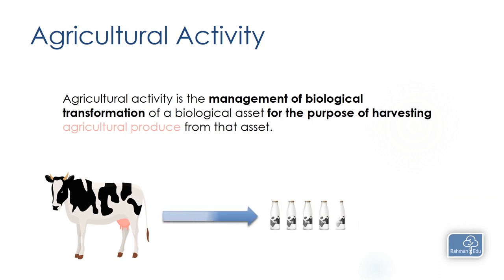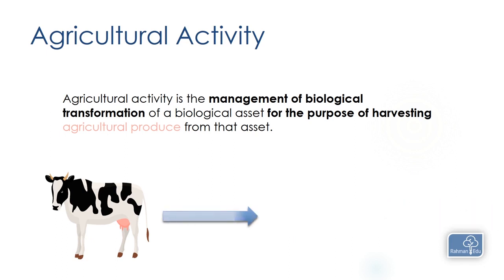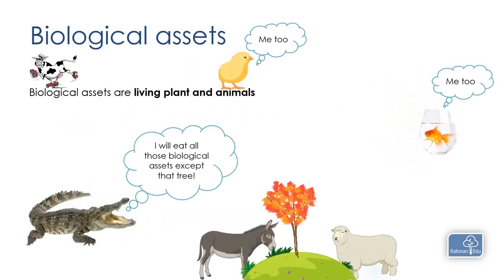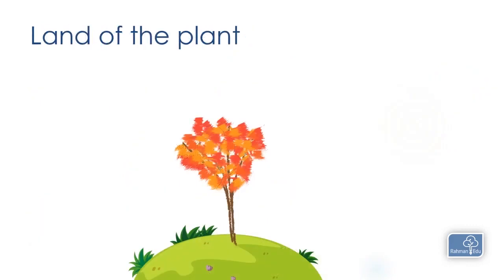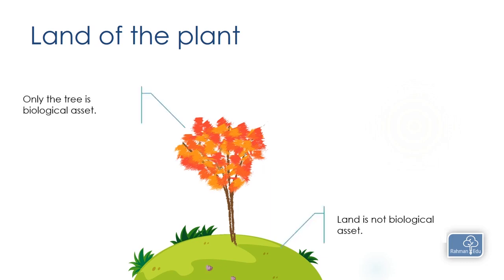You may ask what is a biological asset. Biological assets are living plants and animals. It will include all kinds of animals like sheep, donkeys, cows, and goats. It includes trees and plants and fishes and chickens and birds and other living things. Note that trees are sometimes physically attached to a particular piece of land — the tree is a biological asset but the land is not.